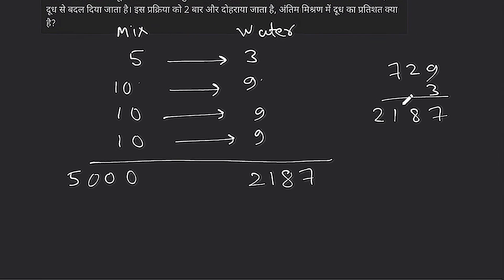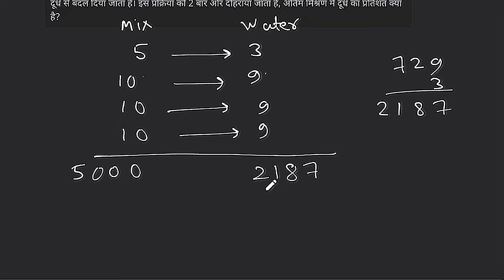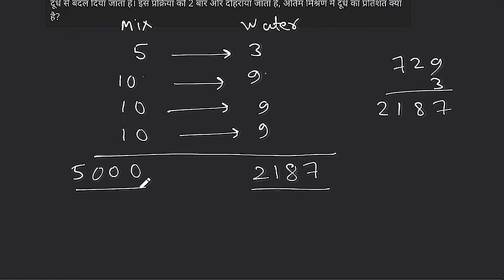If we see the mixture of milk and water, it will be 5,000. We can do this as: 5,000 minus 2,187. What is the percentage of milk? We can take 5,000 minus 2,187. How much is that?